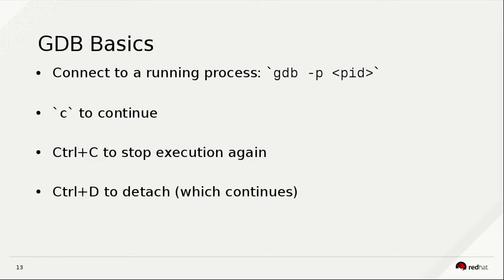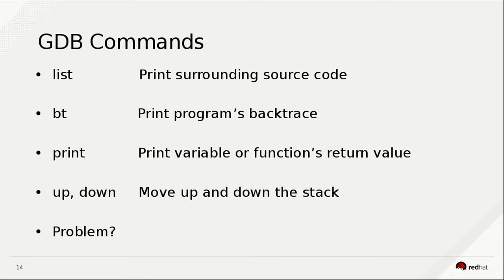A few basics. We can connect to a running process using GDB minus P, where P stands for process ID. We can then use C to continue the run of the code, Control-C to stop it again, and Control-D to detach from it completely and let the code run on its own. The commands are very similar to PDB. We can list the surrounding C code, see the C backtrace, and so on.